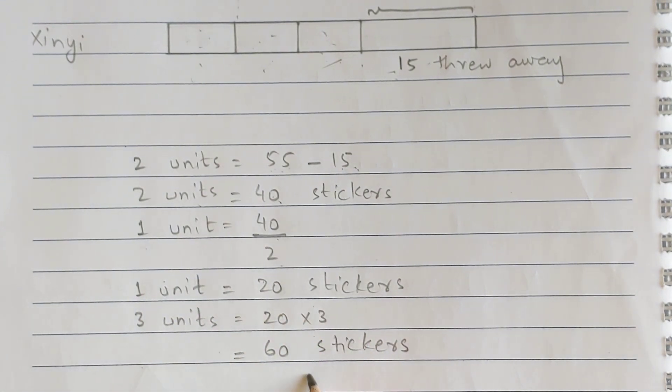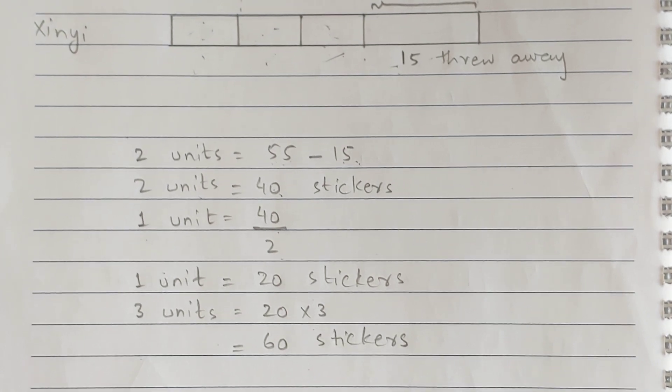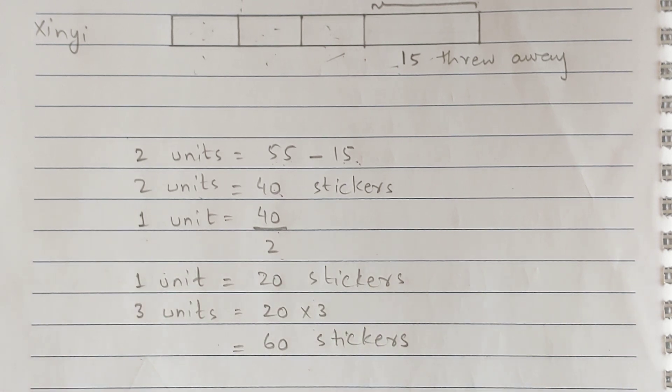When 1 unit is 20 stickers, Zini had 3 units left after throwing away 15. So 3 units equals 60 stickers. That's the answer to question number 5. Students, I hope this is clear. If you still have questions, please ask in the comment section. Thanks for watching the video till the end. Take care, Allah Hafiz.